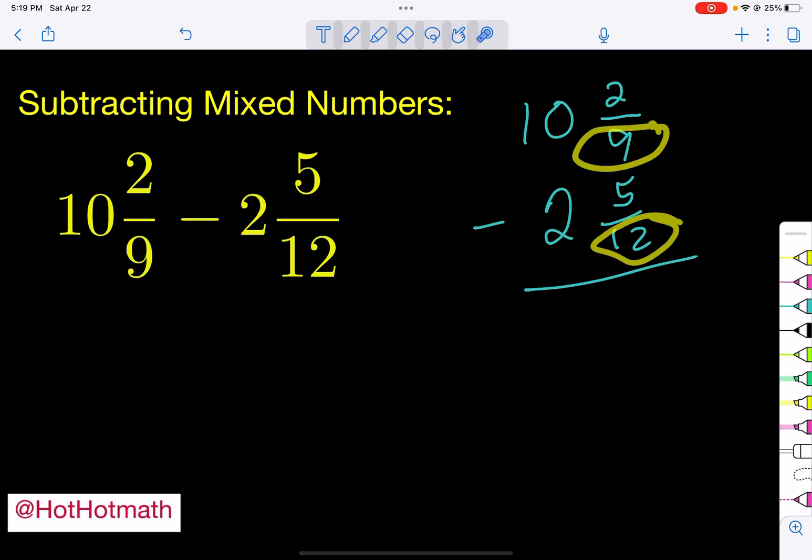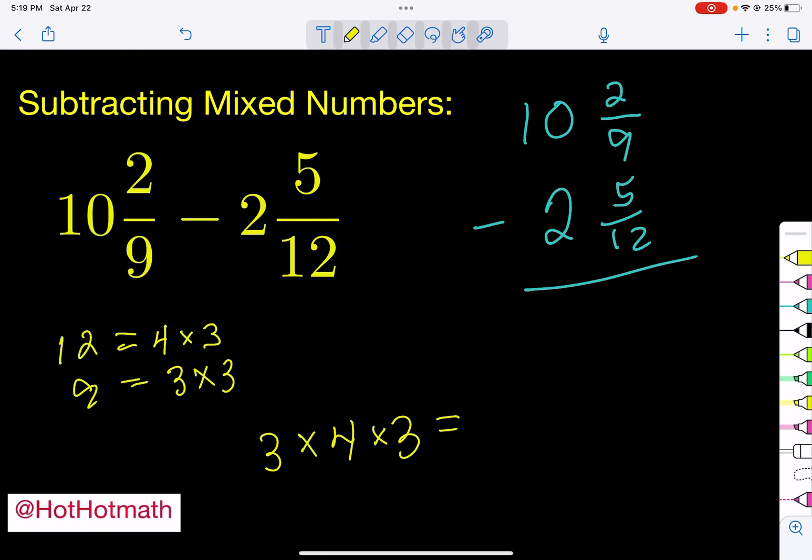have common denominators. Common denominator means we have found a number that they both will go into. Let's do a little bit of thinking here: 12 is 4 times 3, 9 is 3 times 3. So what would their least common multiple be? Well, they both already have a 3 in common. The 12 has an extra 4, the 9 has an extra 3. If we multiply those together, 36